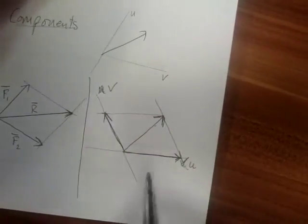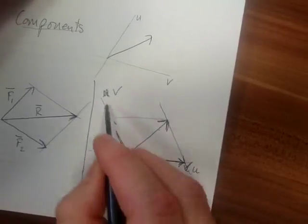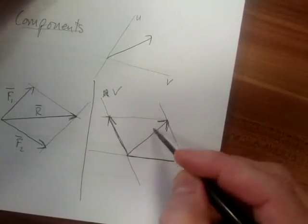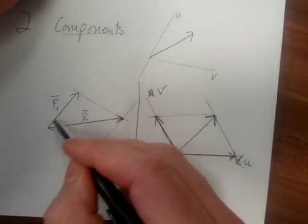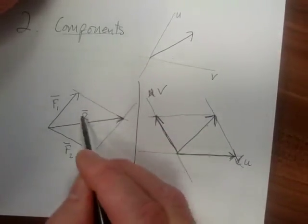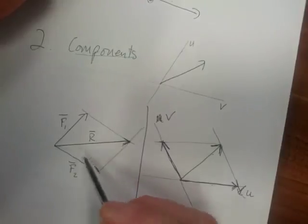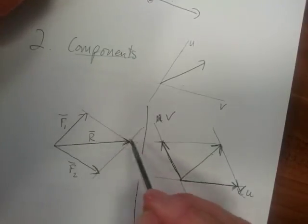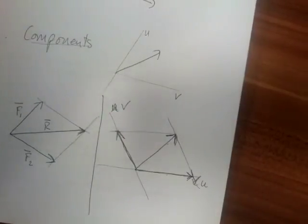What does this mean? Think critically. It means that if I apply a force in this direction with this magnitude, and I apply a force in this direction with this magnitude, I will get this resultant force. They're identical — the one uses the components to calculate a resultant, and this one you have the resultant and you're trying to calculate the components. We will go into more detail in the next video.